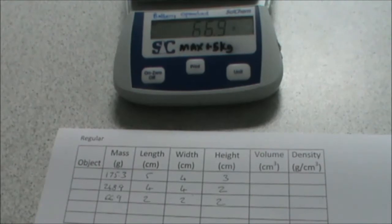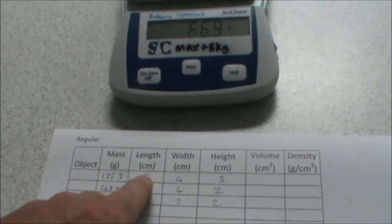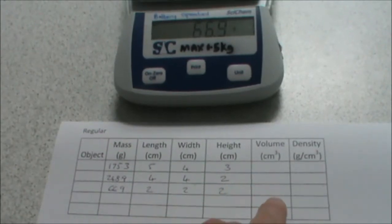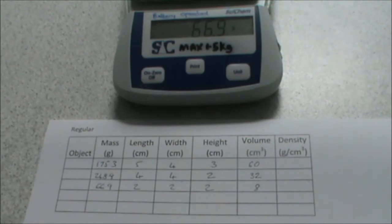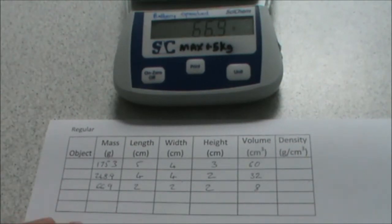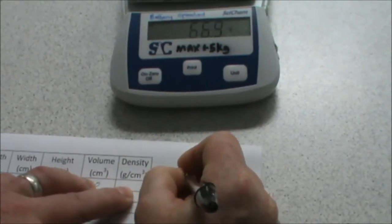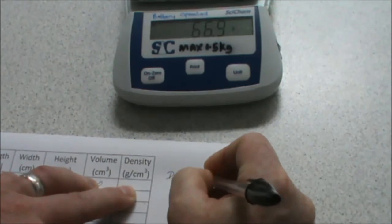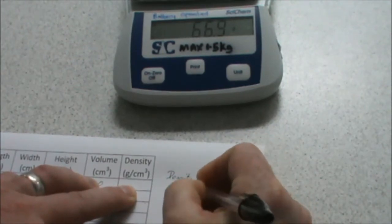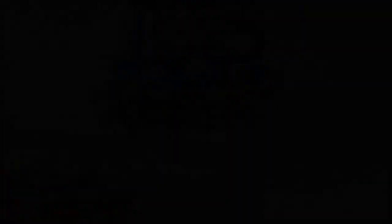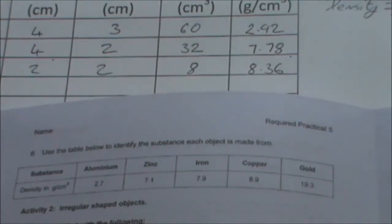You can calculate the volume of your object by multiplying these three columns together and put your results in there. Now, you can check your results against mine. And we can now calculate density. In order to calculate the density, we use the formula density equals mass divided by volume.